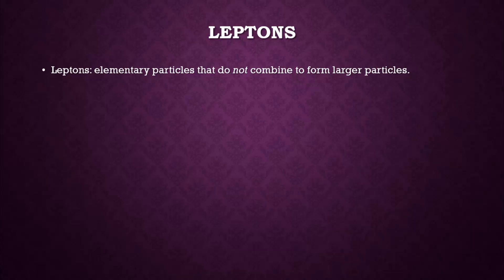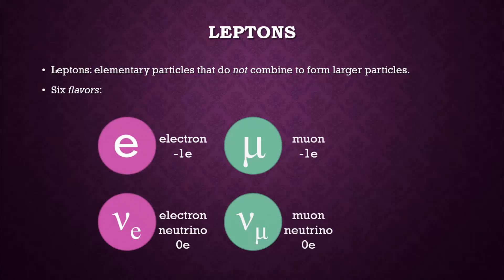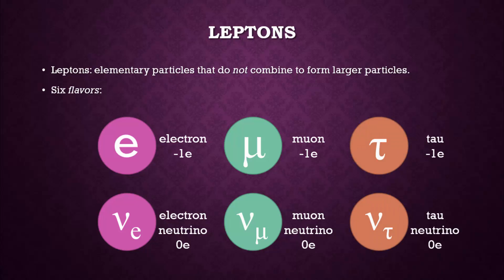Leptons are elementary particles that do not combine to form larger particles. There are also six flavors of leptons. There are the electron and the electron neutrino, the muon and the muon neutrino, and the tau and the tau neutrino.